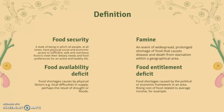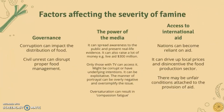Now we're going to look at factors affecting the severity of famine: governance, power of the media, and access to international aid. On governance, corruption can impact the distribution of food and lead to famine or exacerbate it. Civil unrest can disrupt proper food management. Regarding the power of the media, the media can spread awareness to the public and present real-life evidence, which can be helpful in a famine situation.